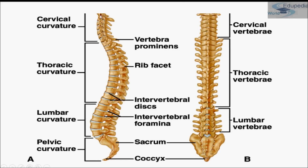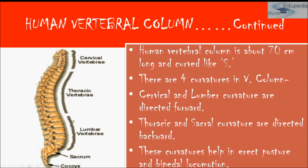The cervical and lumbar curvatures are directed forward, while the thoracic and sacral curvatures are directed backward. The human vertebral column is about 70 centimeters long and curved like an S. These four curvatures help in erect posture and bipedal locomotion. The vertebral column is differentiated into five regions: cervical, thoracic, lumbar, sacral, and caudal.